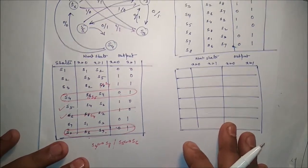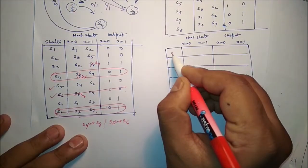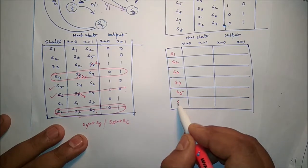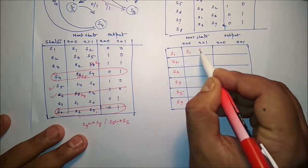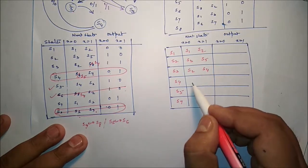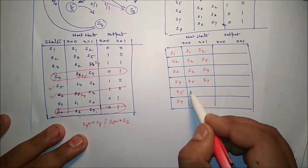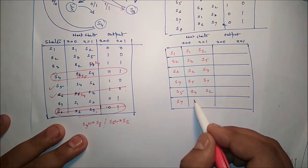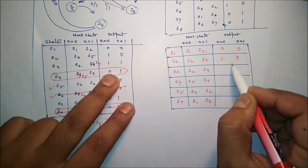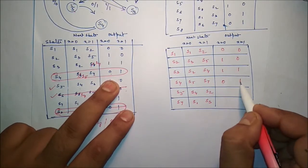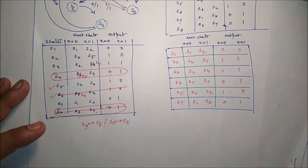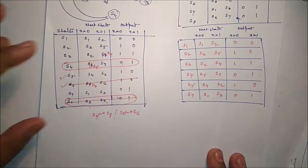We can now reduce two states. The reduced state table is redrawn with states S1, S2, S3, S4, S5, and S7. The next states and outputs for each state and input are filled in accordingly: S1 goes to S1 and S2; S2 goes to S3 and S5; S3 goes to S5 and S4; S4 goes to S5 and S7; S5 goes to S4 and S2; and S7 goes to S1 and S3. From this we can easily draw the state diagram.